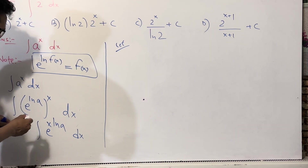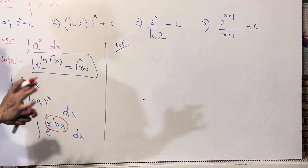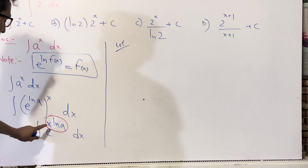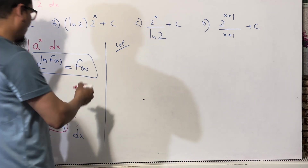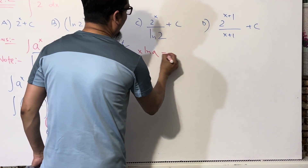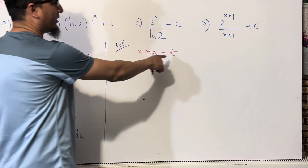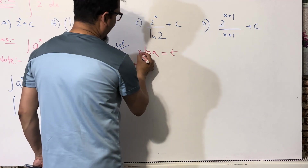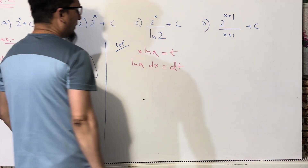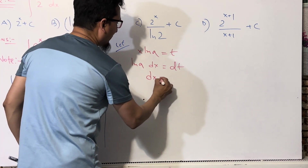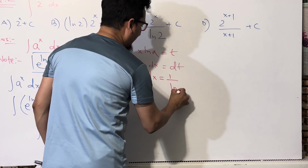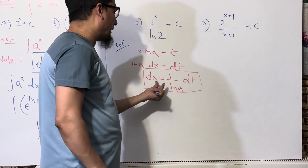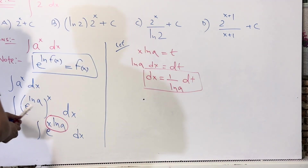Since we are solving an AP question, I assume you know the fundamental concepts of calculus. Let me assume t = x · ln a. Differentiating, since ln a is a constant, we get ln a · dx = dt, so dx can be written as dt / ln a.